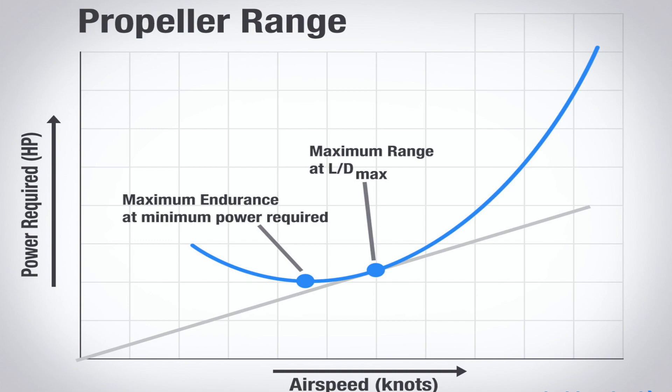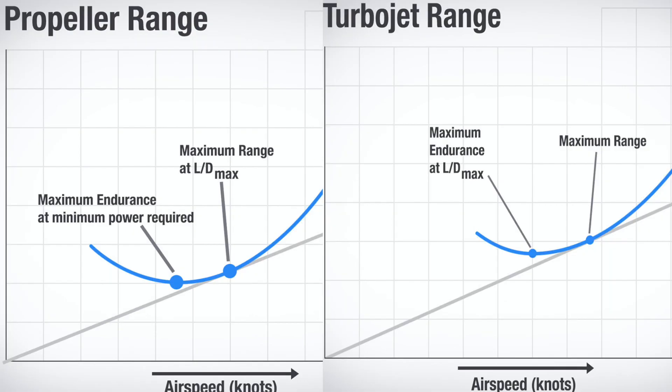In a propeller driven airplane, best range happens at the point where induced drag equals parasite drag. You can quickly see that the best range speed for a prop happens at a much slower point on the drag curve than it does for a jet.